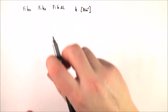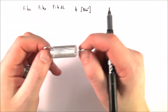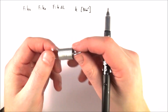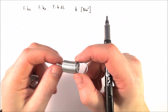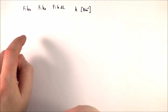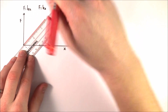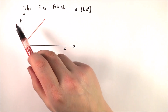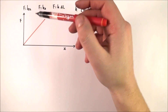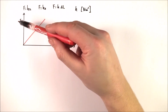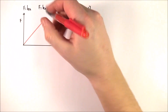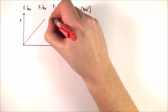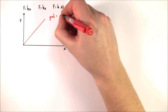If we look at the extension of a spring before it gets to its limit of proportionality — which is pretty much the same as its elastic limit — we get a graph that looks like this. Force is on the y-axis and extension on the x-axis. The gradient is equal to F divided by x, and F divided by x is equal to the spring constant. So the gradient is equal to the spring constant of that spring.